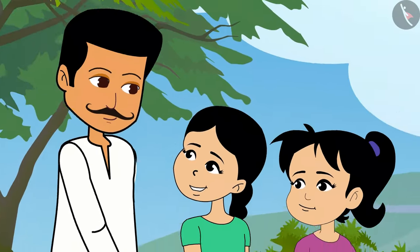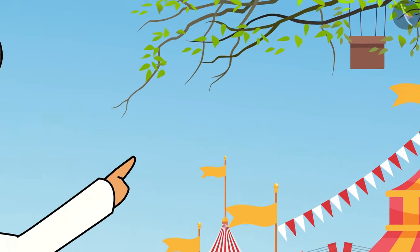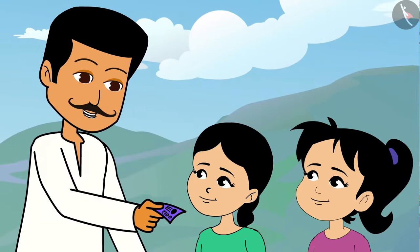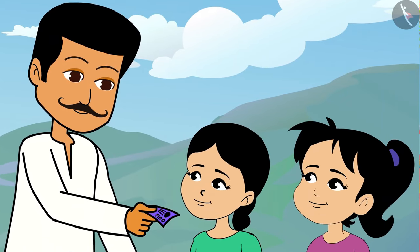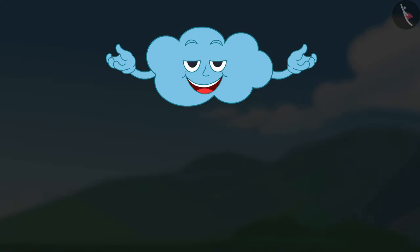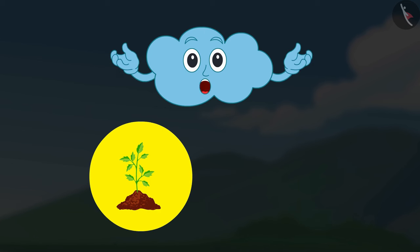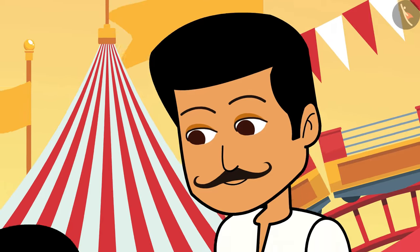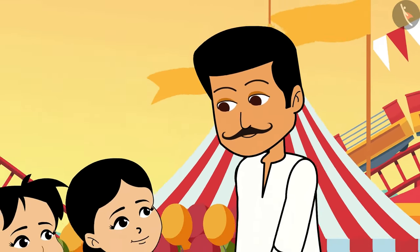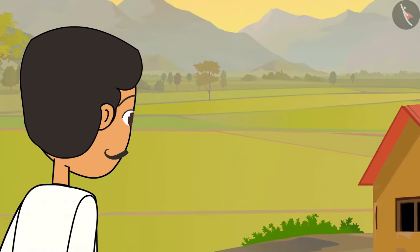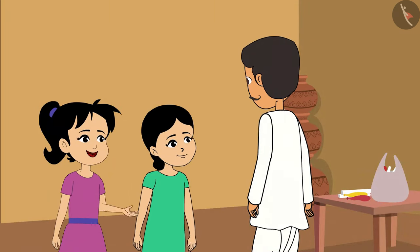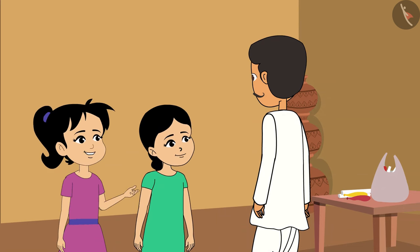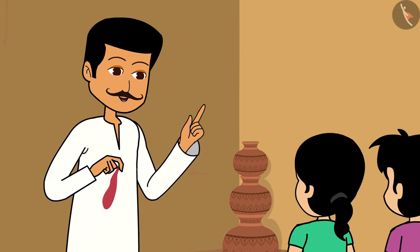I see. Look, we have reached the fair. Go and play on those swings. Take this money. I will go and buy some balloons and candles and tell you more about the properties of air. Children, try these experiments at home. Take a plant and close it with a bucket for four days and see the result. You both must have had fun on the swings. Let's go home now. Father, we have come home. Now tell, why have you brought these balloons? I am excited to know.